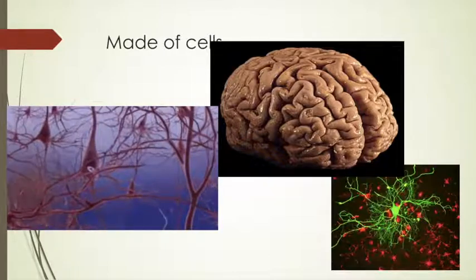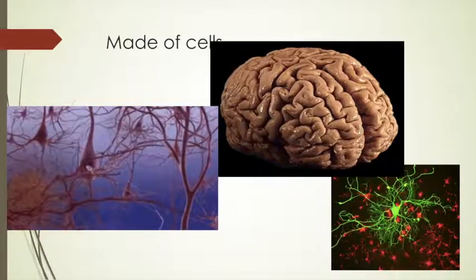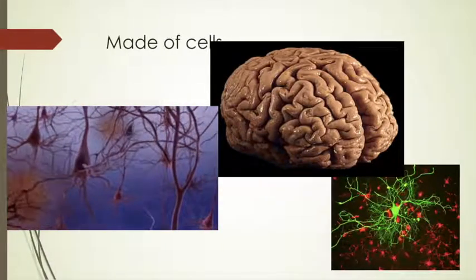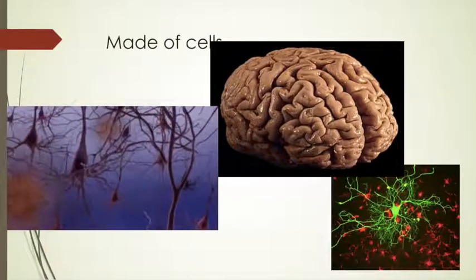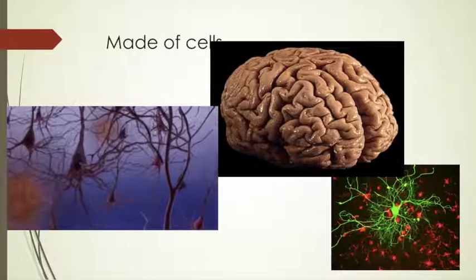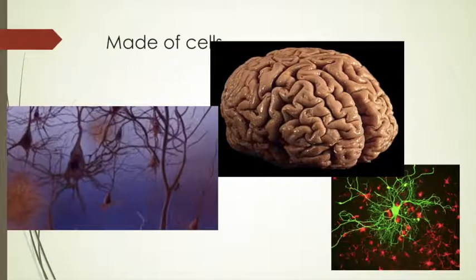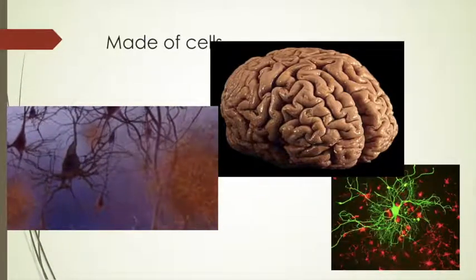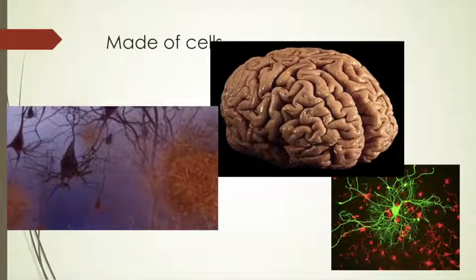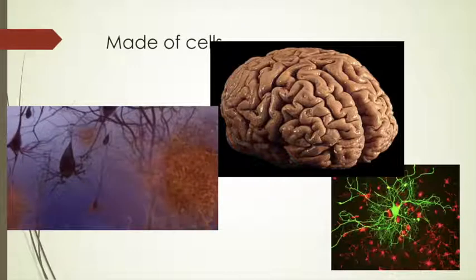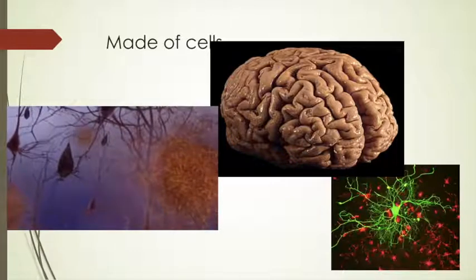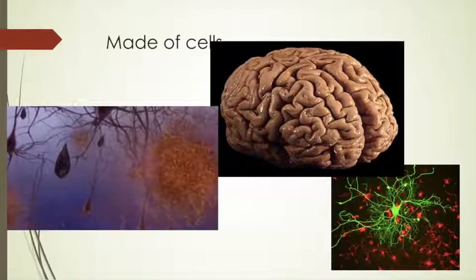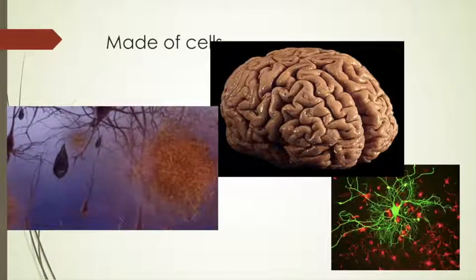All organisms are made of cells. Some organisms are made of just one cell, and we call those unicellular organisms, while other organisms, like us, are composed of billions of different cells in our body.